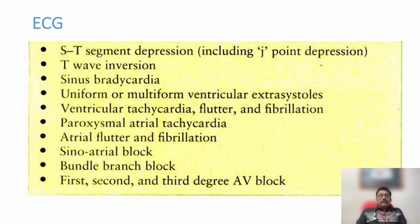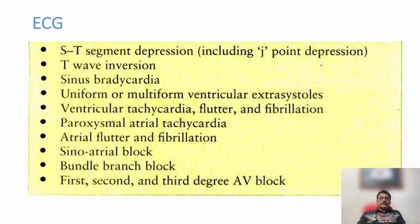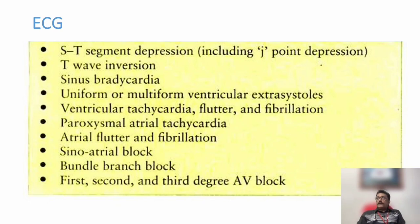There are many arrhythmias produced by Digoxin toxicity. But remember: all these findings are associated with a controlled ventricular rate. Even atrial flutter, atrial fibrillation, and paroxysmal atrial tachycardia — most of the time you can get severe bradyarrhythmia. All ECG abnormalities can be present: bigeminy, trigeminy, multiple ectopics, paroxysmal atrial rhythm, atrial fibrillation, and atrial flutter.